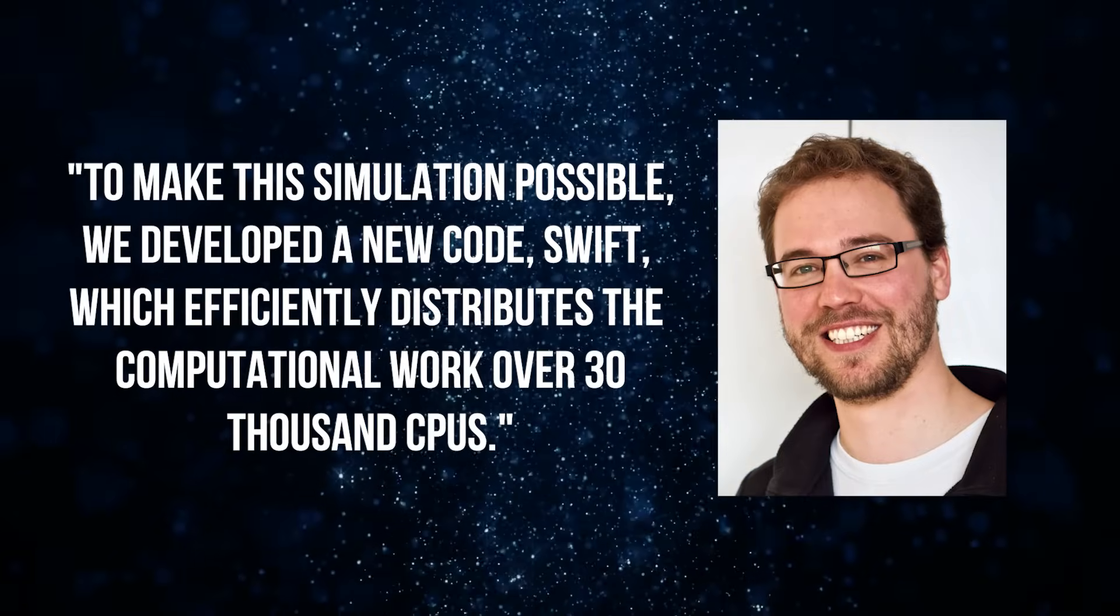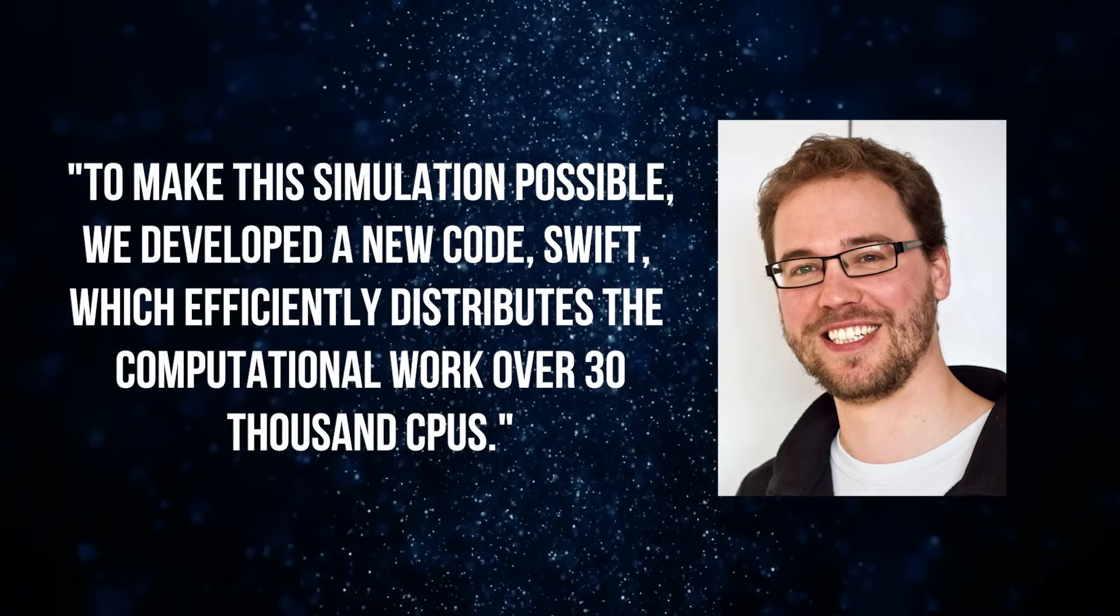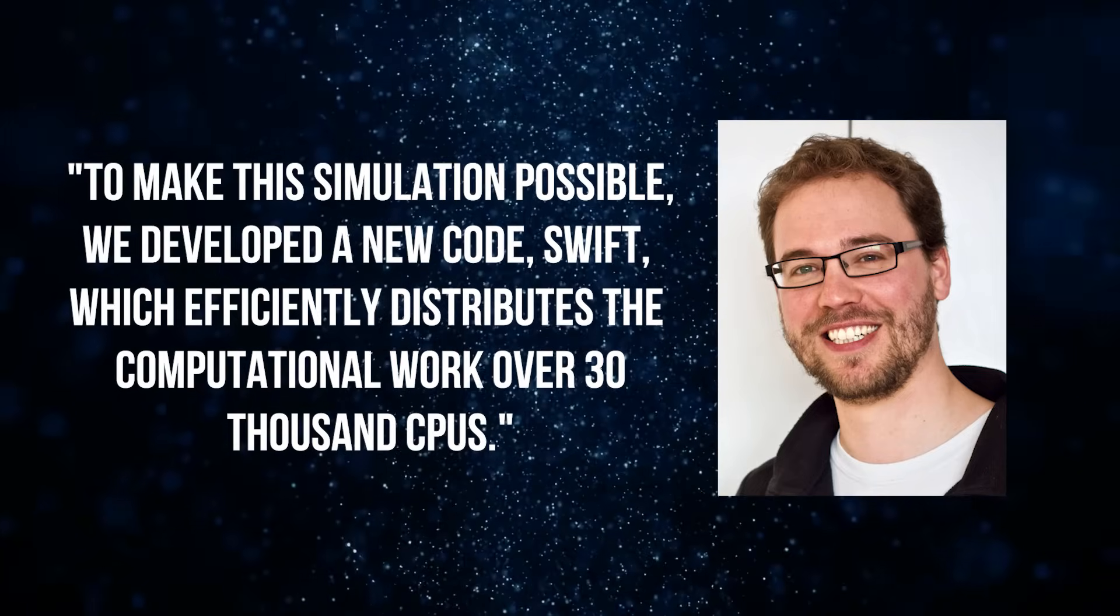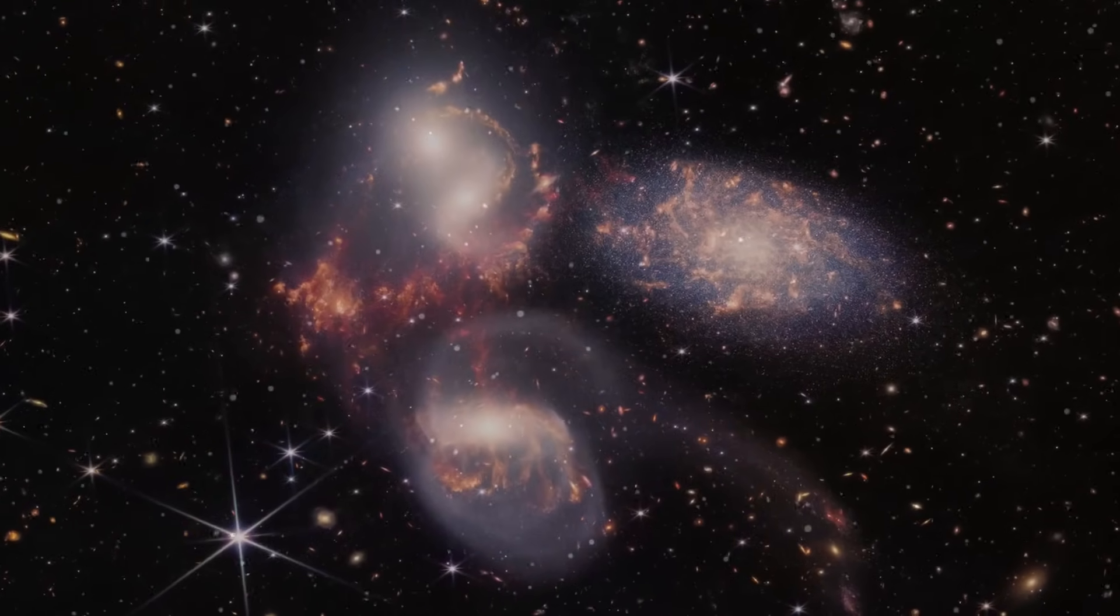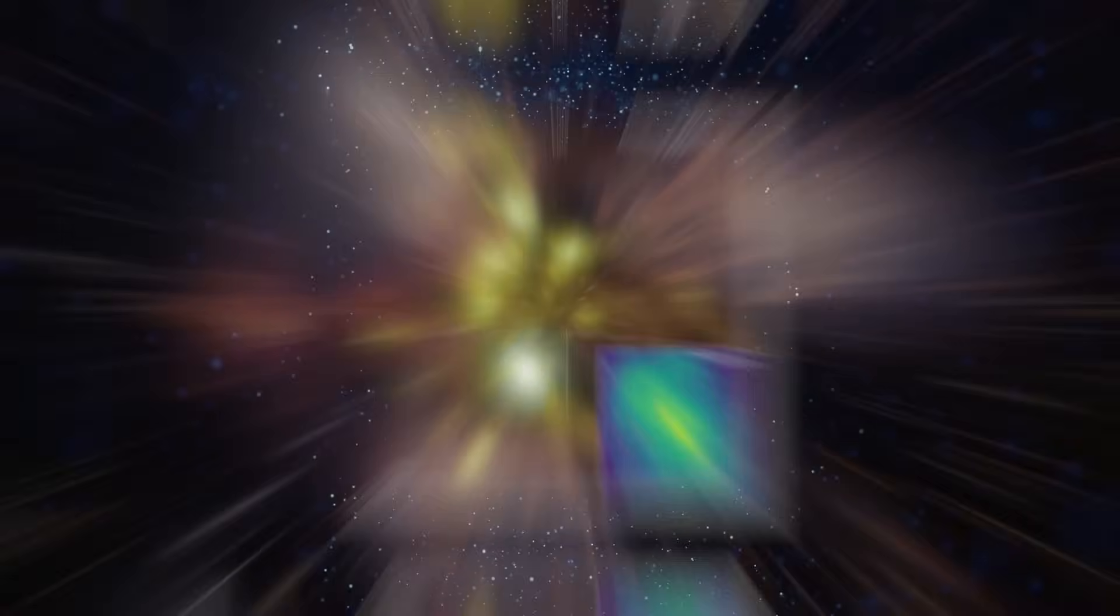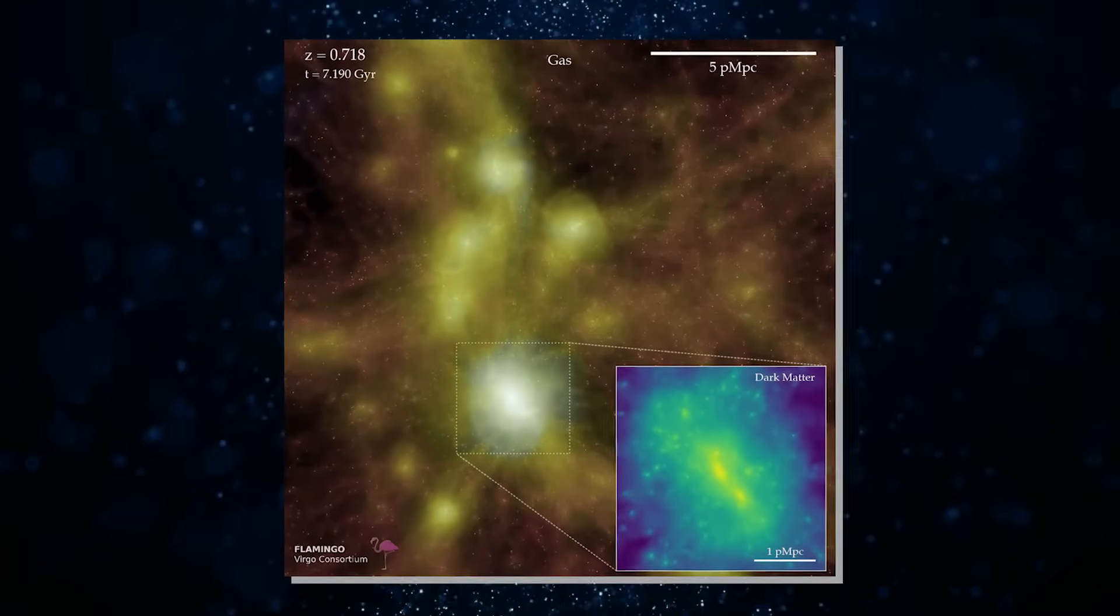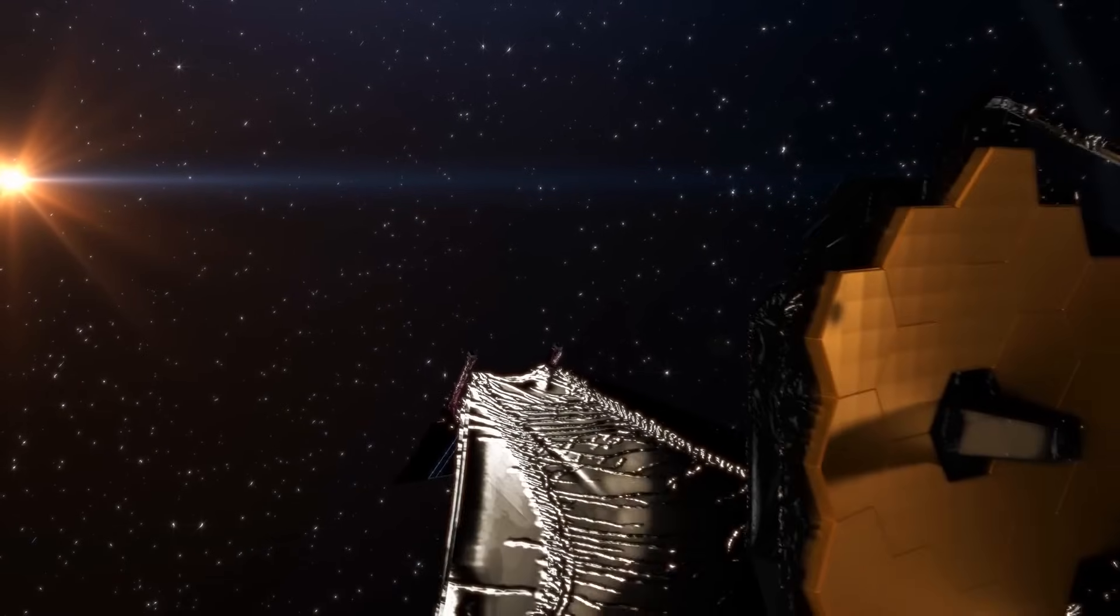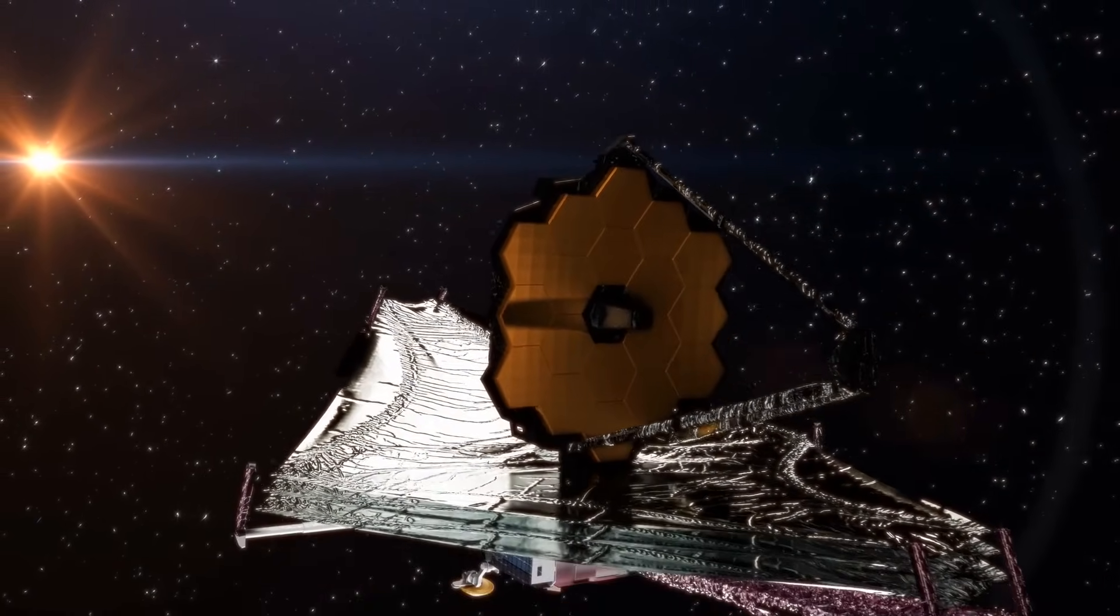He explained, to make this simulation possible, we developed a new code, SWIFT, which efficiently distributes the computational work over 30,000 CPUs. In addition to providing unprecedented visual insights into the universe's evolution, the Flamingo simulations play a vital role in bridging the gap between theoretical predictions and the extensive data collected by advanced astronomical facilities like the James Webb Space Telescope.